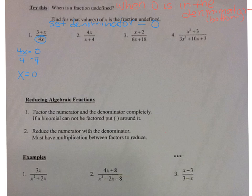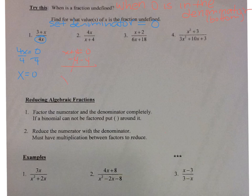For number one, your x can't be equal to zero because then it's undefined. Now let's take a look at two. I want to know what value I can plug in for x so that x plus 4 equals zero. If you're not sure, take x plus 4 and set it equal to zero, subtract 4 — x is equal to negative 4. So my fraction is undefined when x is equal to negative 4.